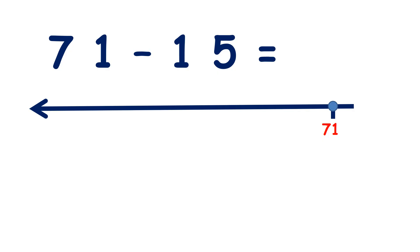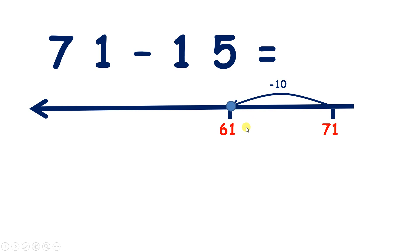Now we have 71 minus 15. So we have 71 on our number line. To subtract 15, we need to take away one ten and five units. So let's start by taking away one ten. 71 take away ten is 61. So that's our ten dealt with.